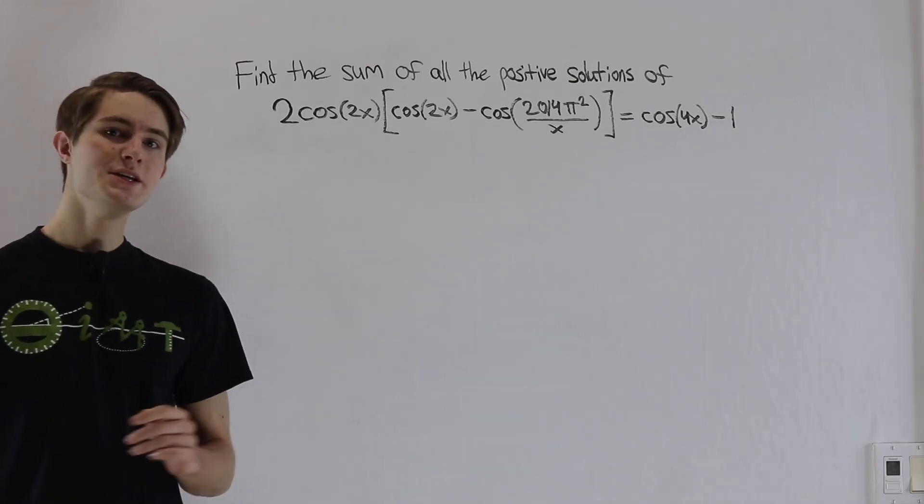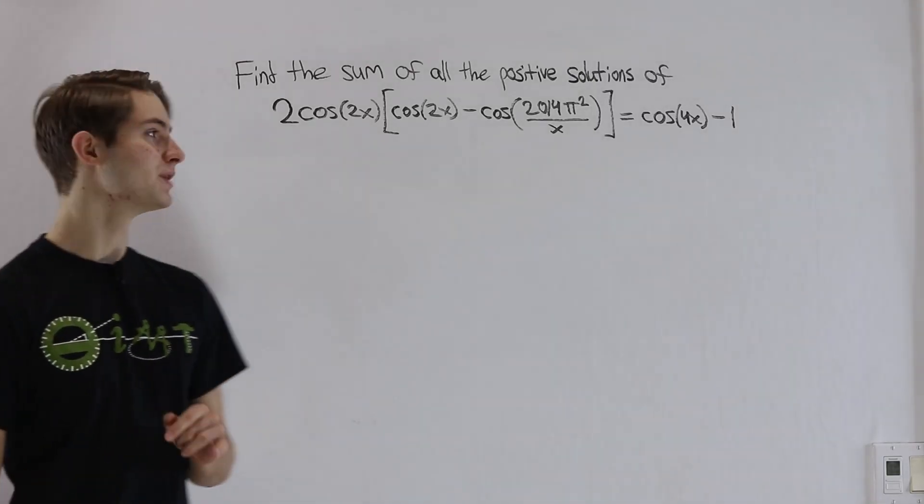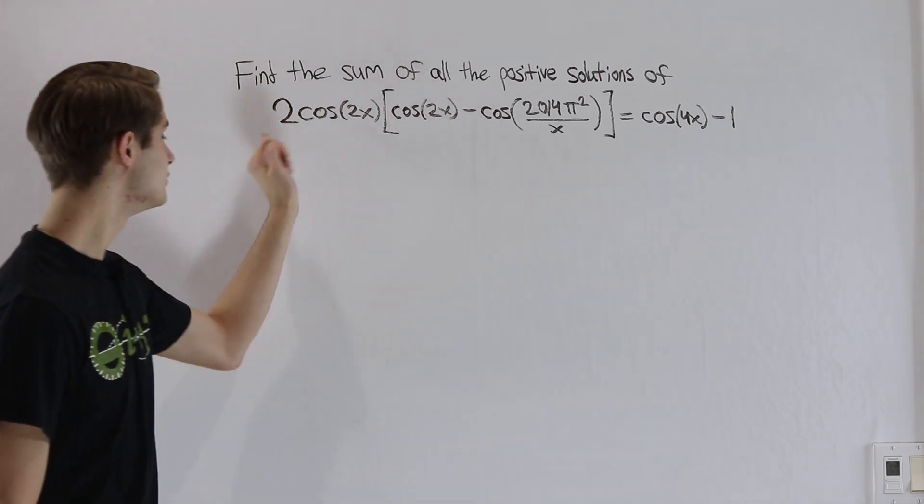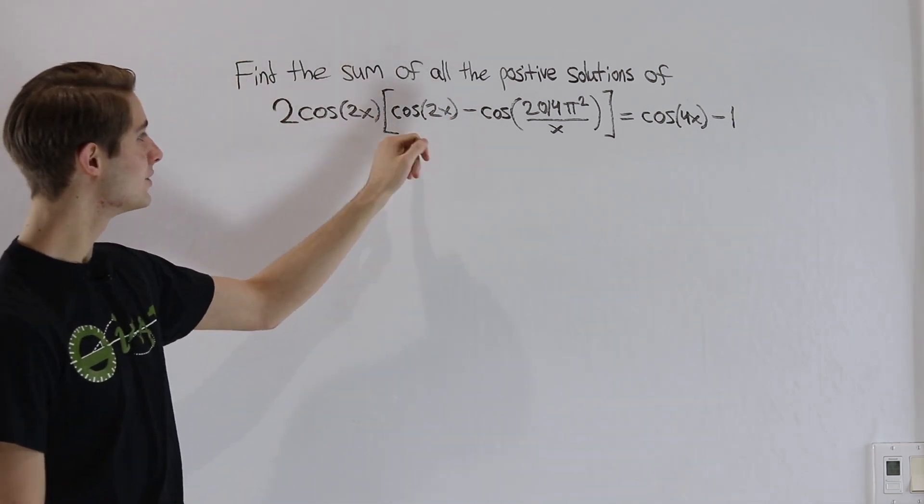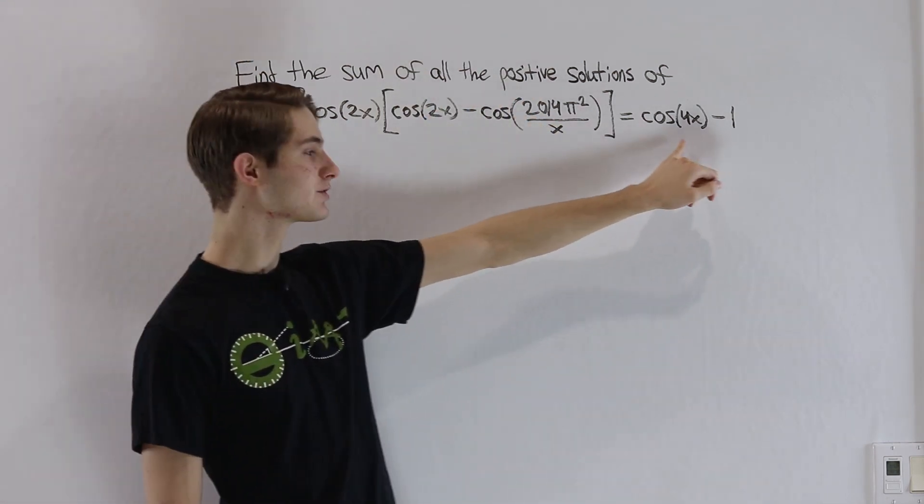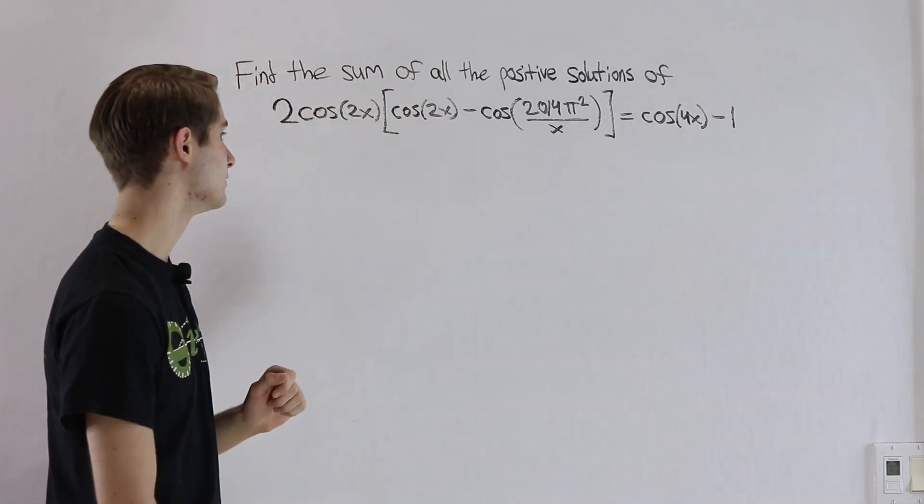We are going to do the 2014 AMC 12b problem 25. Find the sum of all the positive solutions of 2 cosine 2x times cosine 2x minus cosine of 2014π squared over x equals cosine of 4x minus 1.